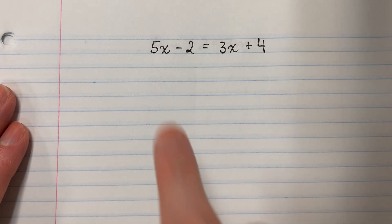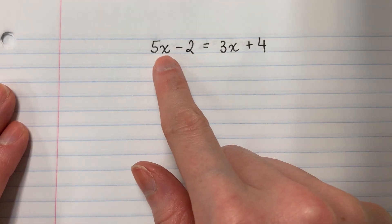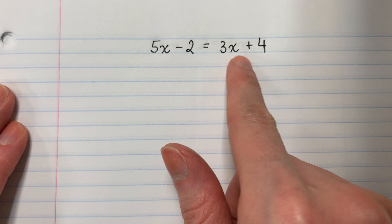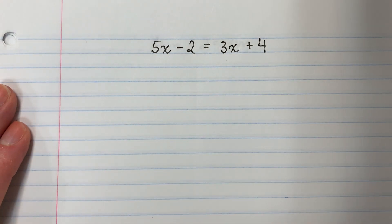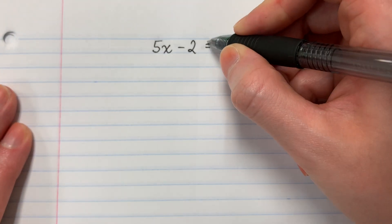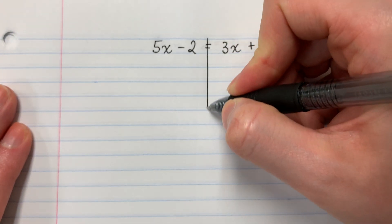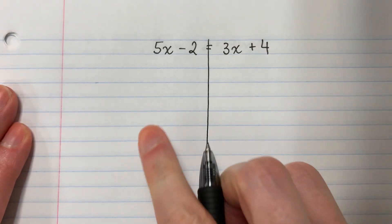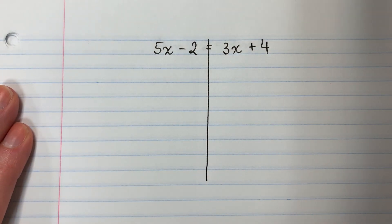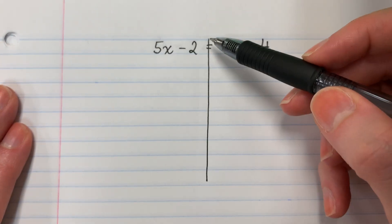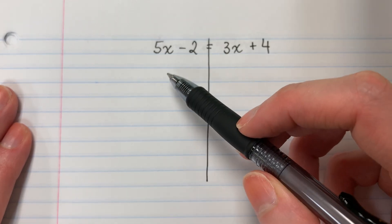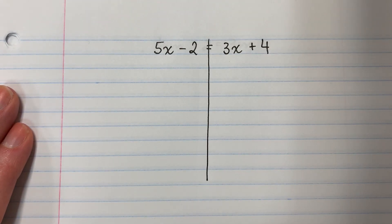Solving for a variable. 5x minus 2 equals 3x plus 4. The first thing I will do is draw a line on my equal sign to separate the left from the right. La primera cosa es voy a poner una línea en la señal igual para separar la izquierda de la derecha.